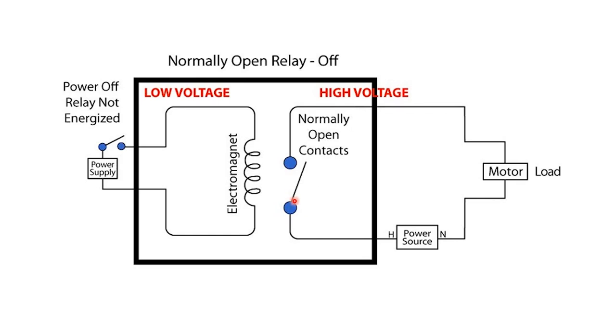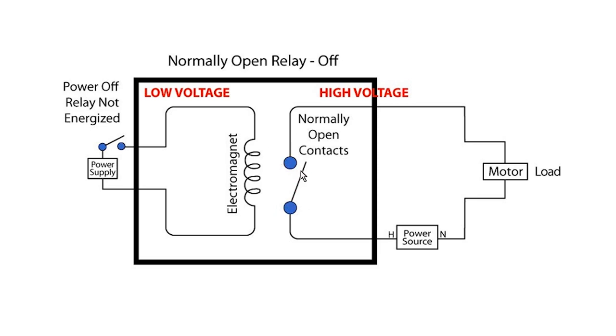When we apply power to the electromagnet, the contacts are closed, allowing electricity to pass through the contact side of the relay. It is important to note that when we have power on the coil, we also have power on the contact side of the relay.